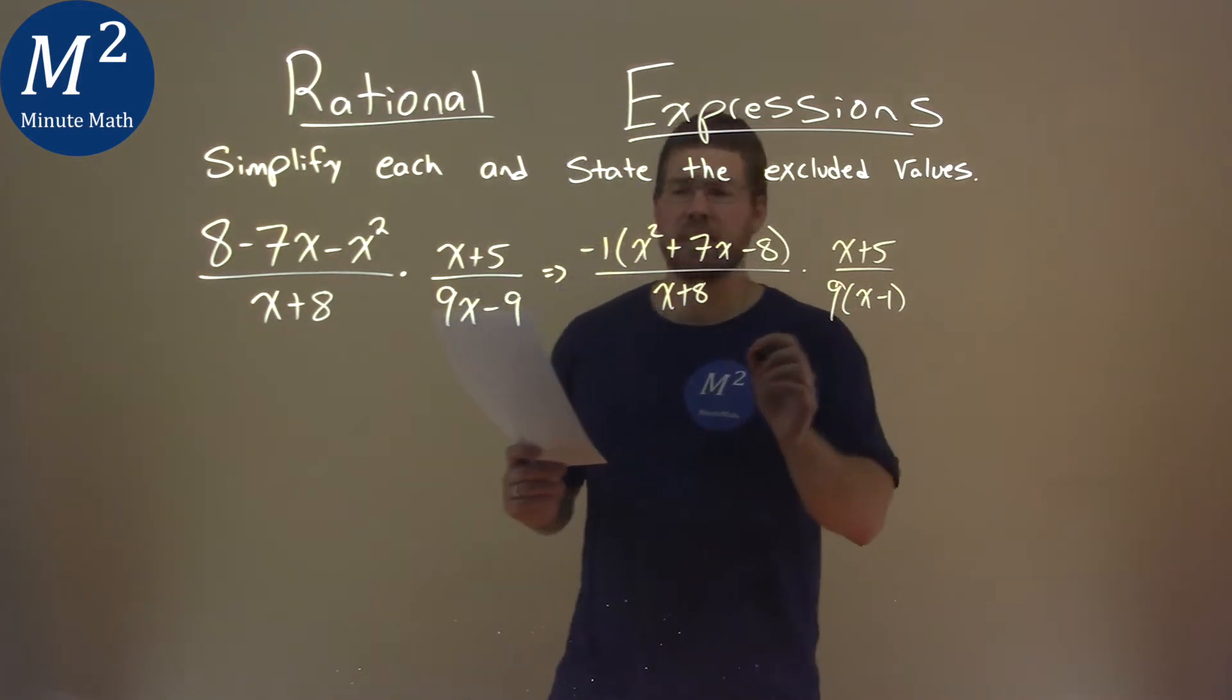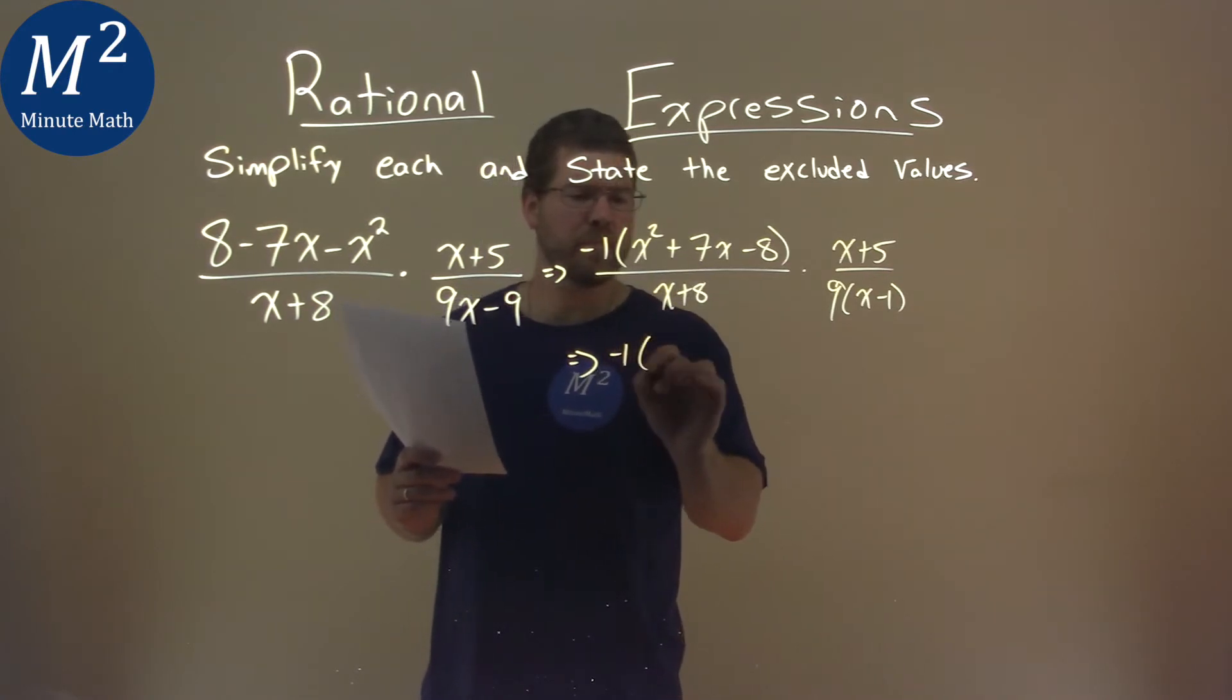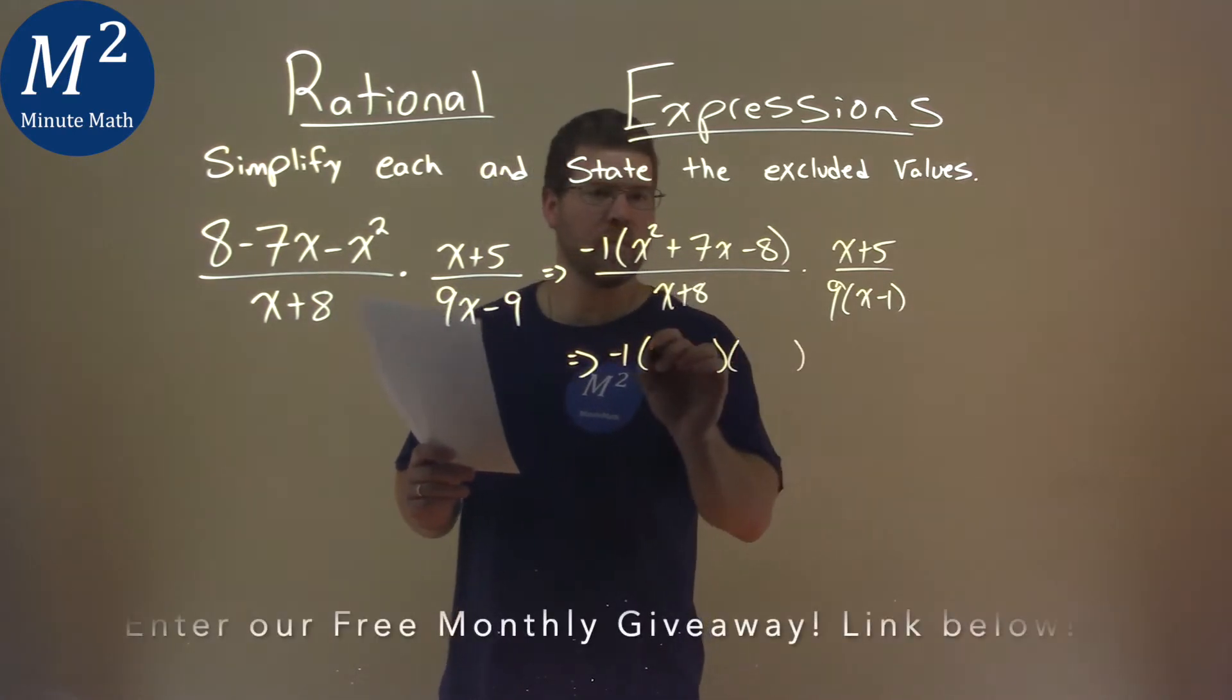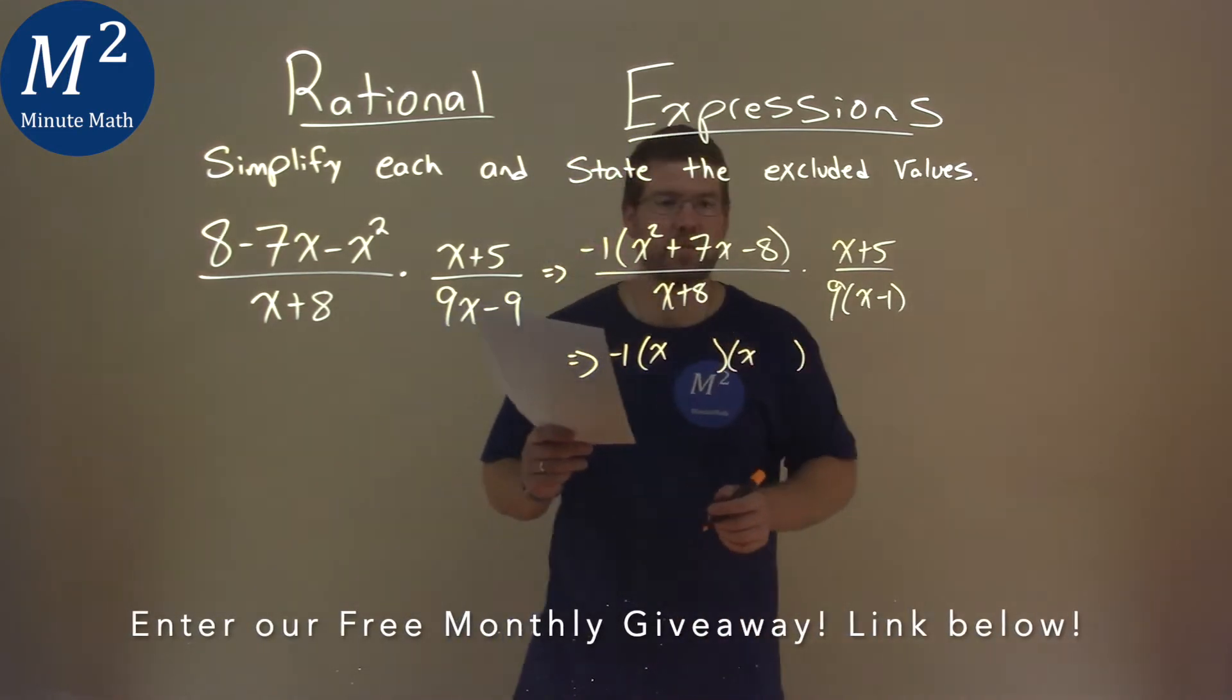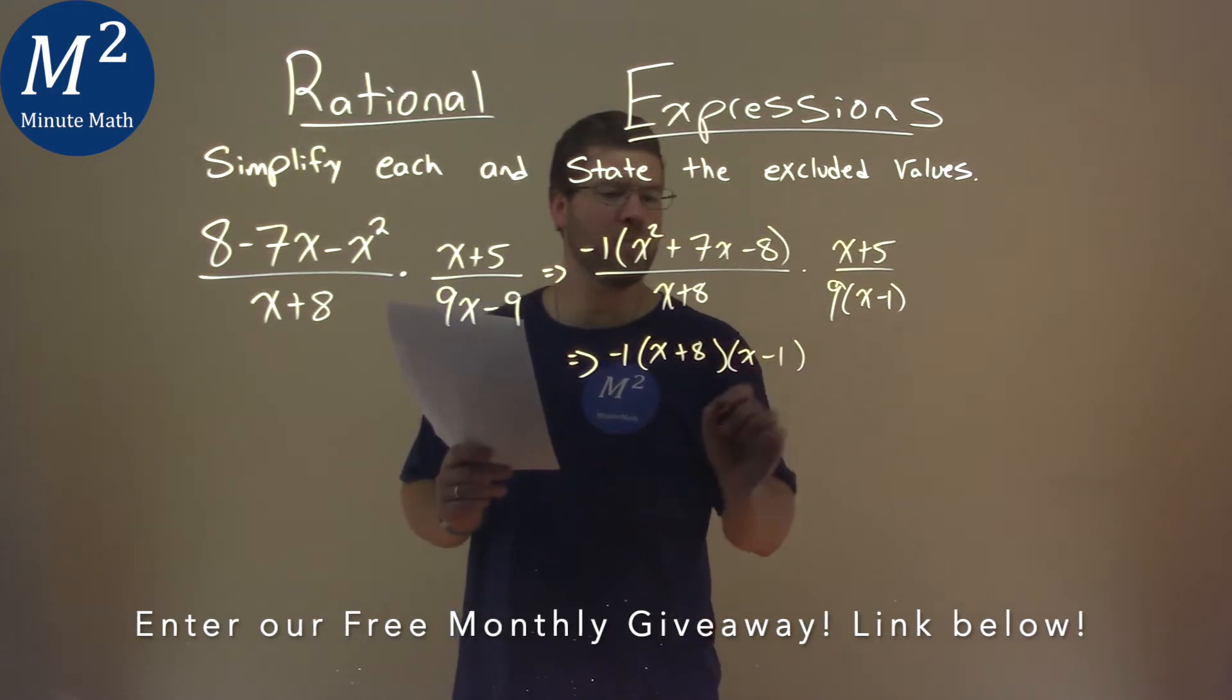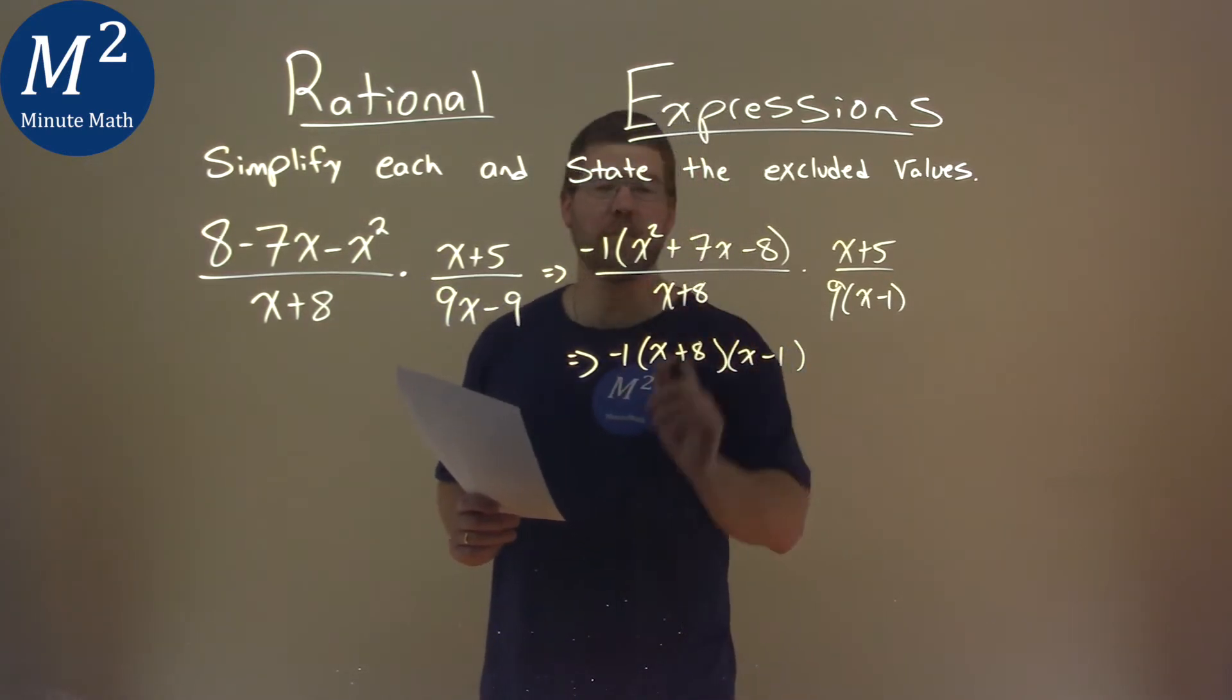Let's keep simplifying this. I want to factor that numerator. What two numbers multiply to be a negative 8, but add to be a positive 7? That's going to be a positive 8 and a negative 1. 8 times negative 1 is a negative 8, add the 2, we get a positive 7.